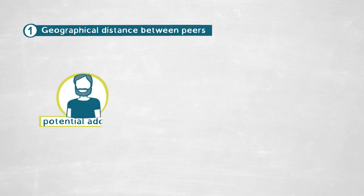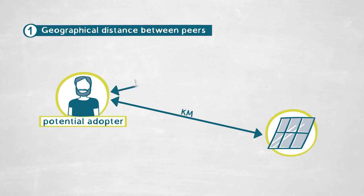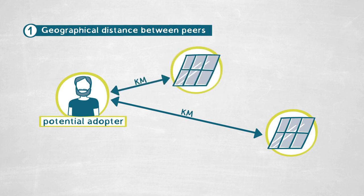The more a prior PV system is located away from the potential adopter, the lower its weight; the closer it is, the higher its weight. We were interested in measuring different peer effects between visible and non-visible PV systems, so we construct a second installed base which is based only on visible PV systems.